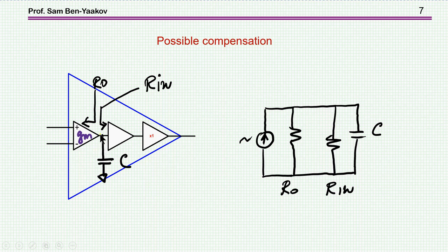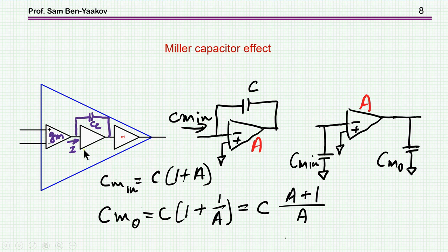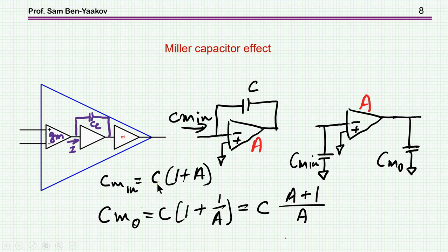So rather than placing a passive capacitor, we use a Miller capacitor. In this case the capacitance seen at the input is much larger than the actual physical capacitor placed in feedback. In fact, the equivalent value is (1 + A) times this capacitor. So the equivalent circuit of a Miller capacitor around an amplifier has a large input Miller capacitor and also an output Miller capacitor, which if A is large is approximately the same as the original physical value.